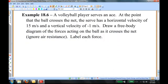Here's another example. 18.6. A volleyball player serves an ace. At the point that the ball crosses the net, the serve has a horizontal velocity of 15 meters per second, and a vertical velocity of negative 1 meter per second. Here's a hint. Those are red herrings. The velocity is not related to the acceleration, and the acceleration has to do with the unbalanced force. Draw a free body diagram of the forces acting on the ball as it crosses the net, ignore air resistance, and label each force.